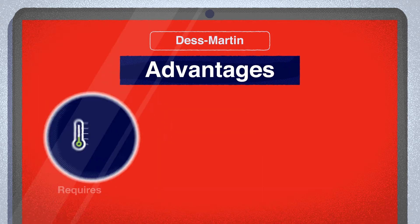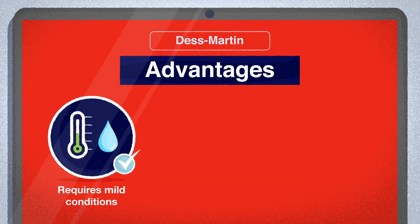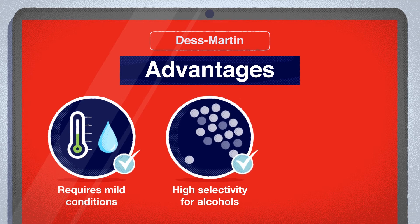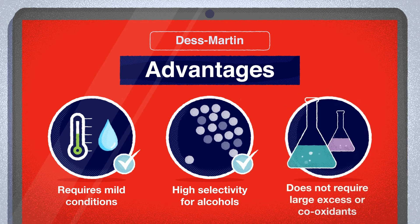The reaction requires mild conditions, typically room temperature in water or organic solvents, and it displays high conversions and fast kinetics. It may be preferable to other oxidation reactions because of its high selectivity for alcohols, making it suitable for multifunctional compounds. It is comparatively much more benign than the use of toxic chromium reagents, and it does not require large excess or co-oxidants.